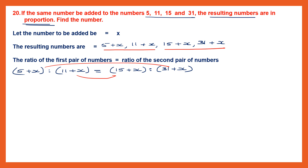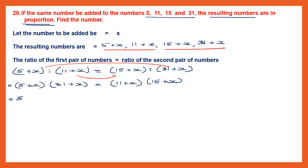We know that the product of means equals the product of extremes. So the extremes give us (5 plus x) multiplied by (31 plus x), and the means give us (11 plus x) into (15 plus x). This is multiplication of binomials. Take the first term 5 and multiply with the whole second binomial: 5 into (31 plus x). Then take x and multiply again with (31 plus x).